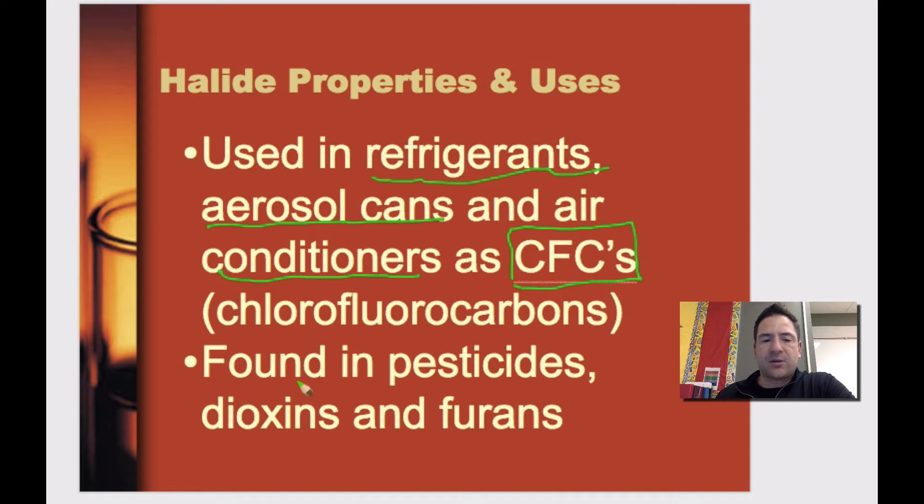You're going to find these halogenated hydrocarbons also found in pesticides, dioxins, and furans, all of which are extremely persistent. They're very persistent. They stay in the environment for a long time. So again, these aren't terrific, actually quite bad for the environment.